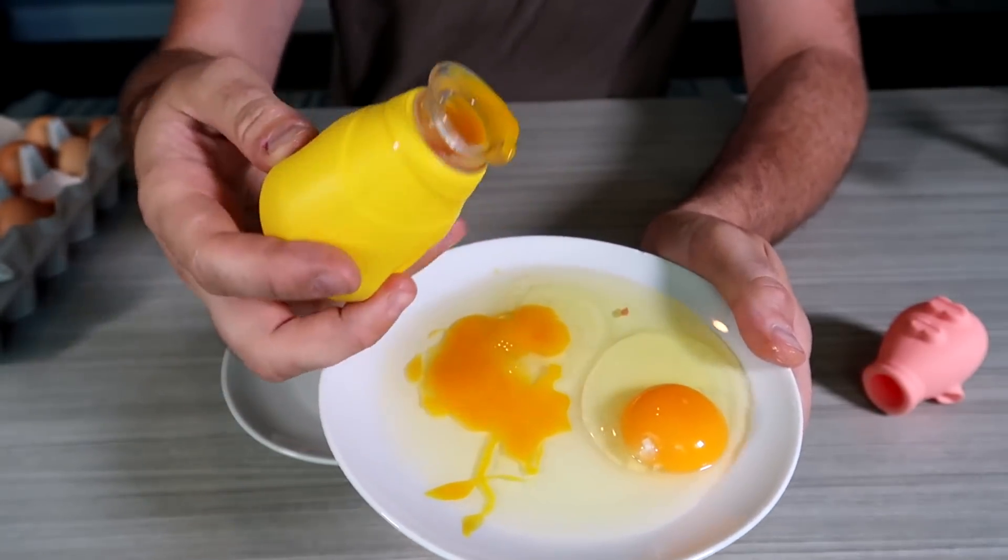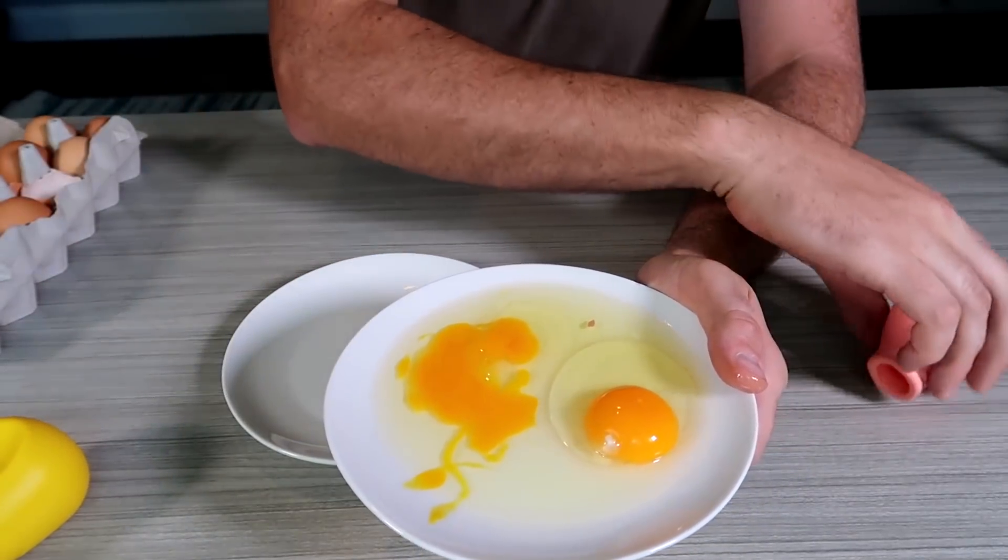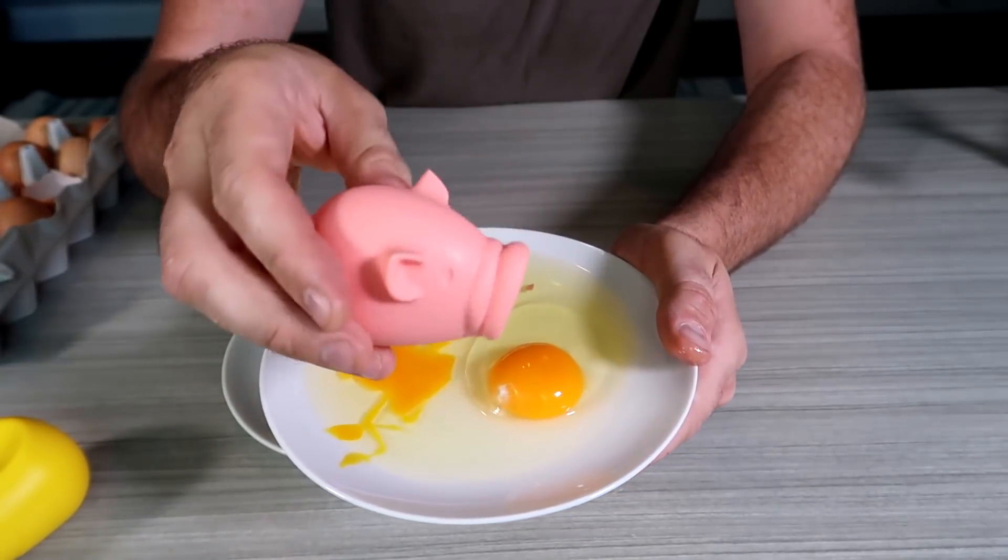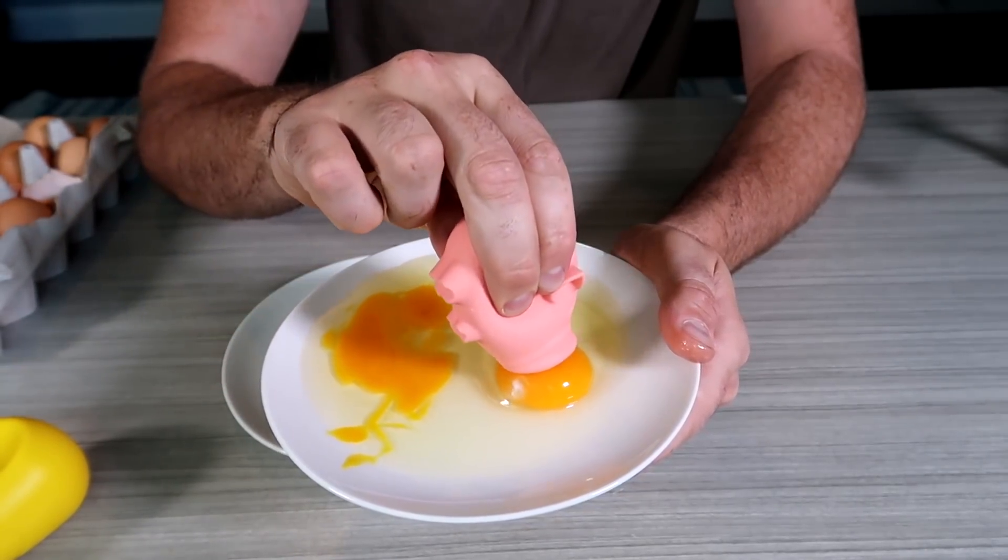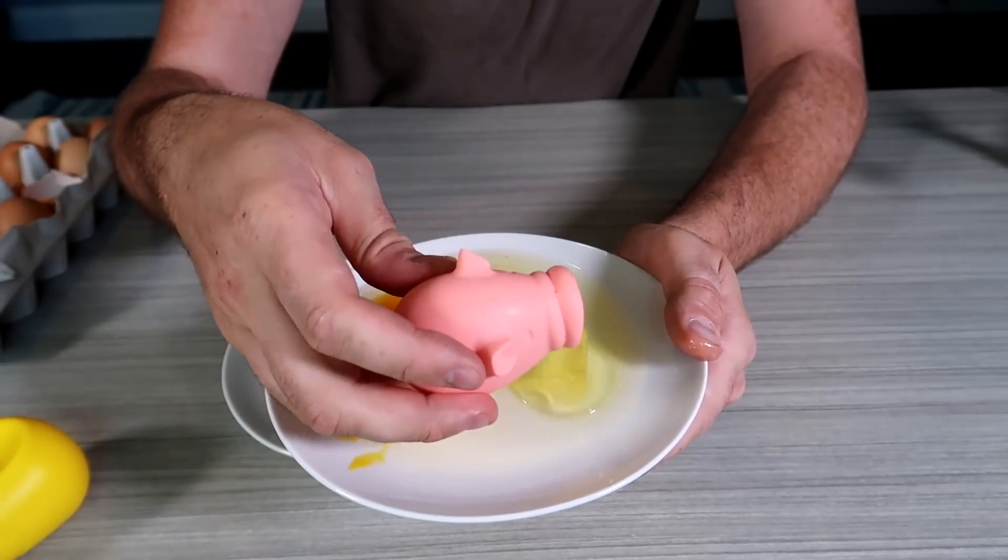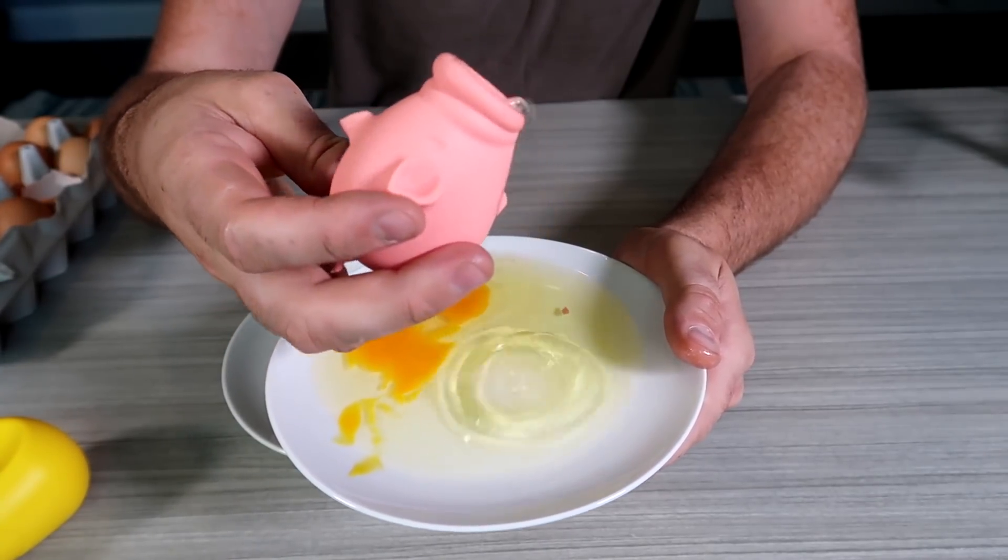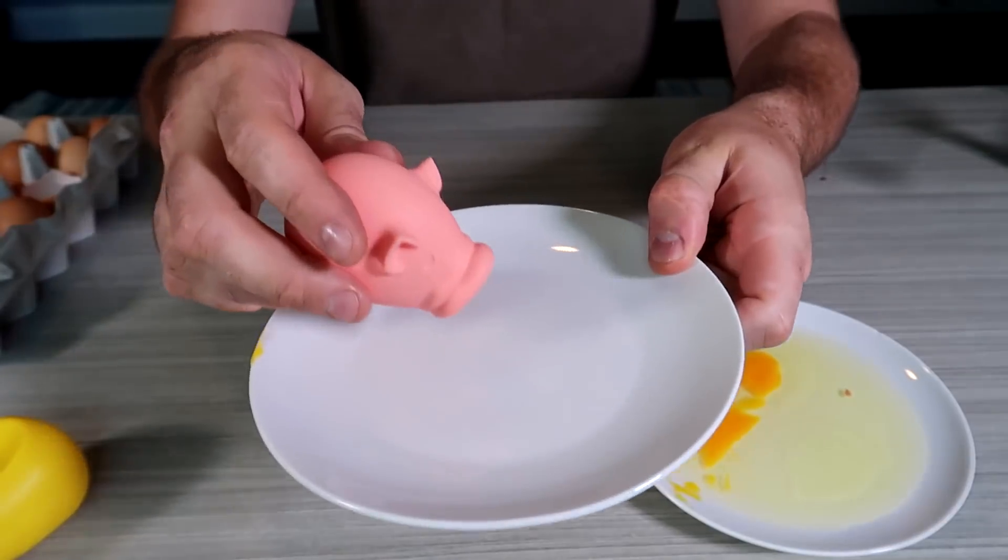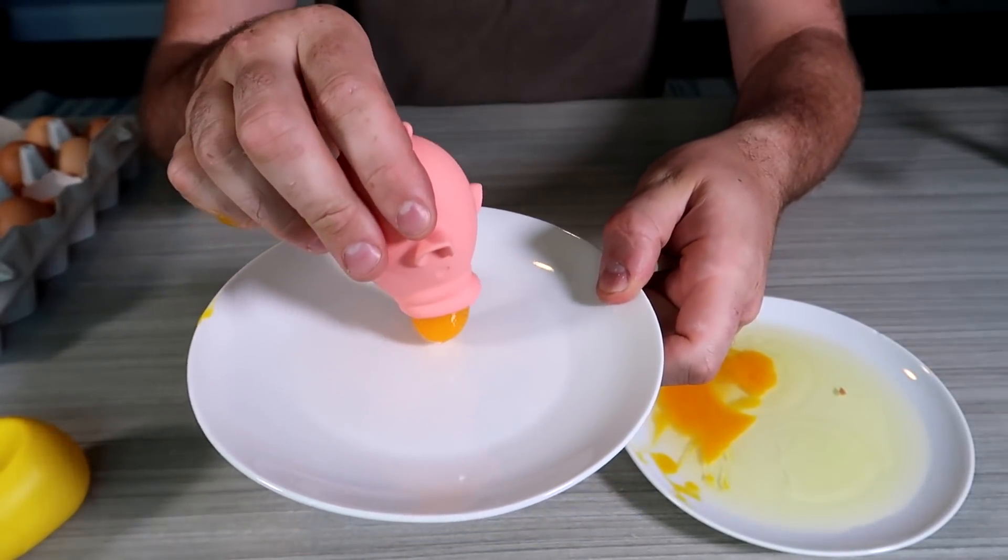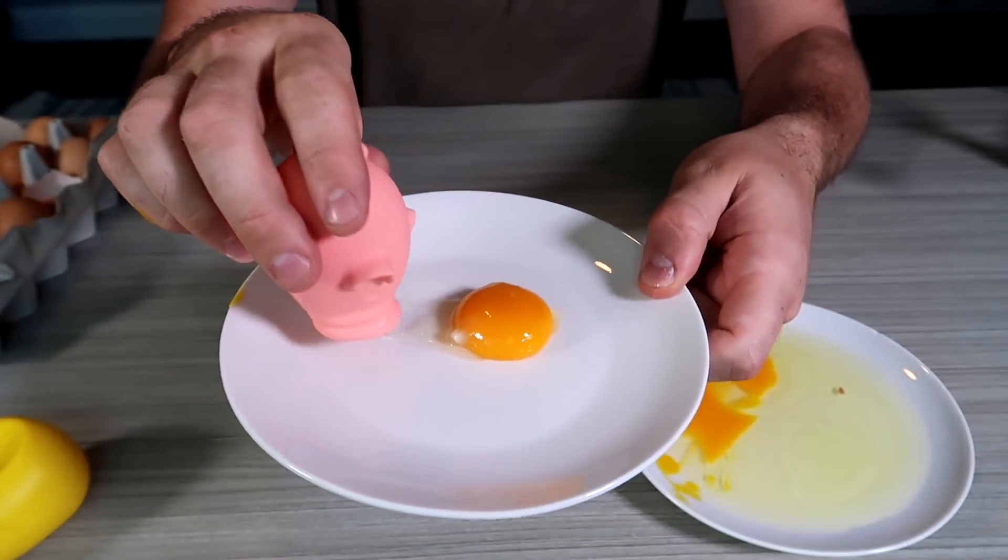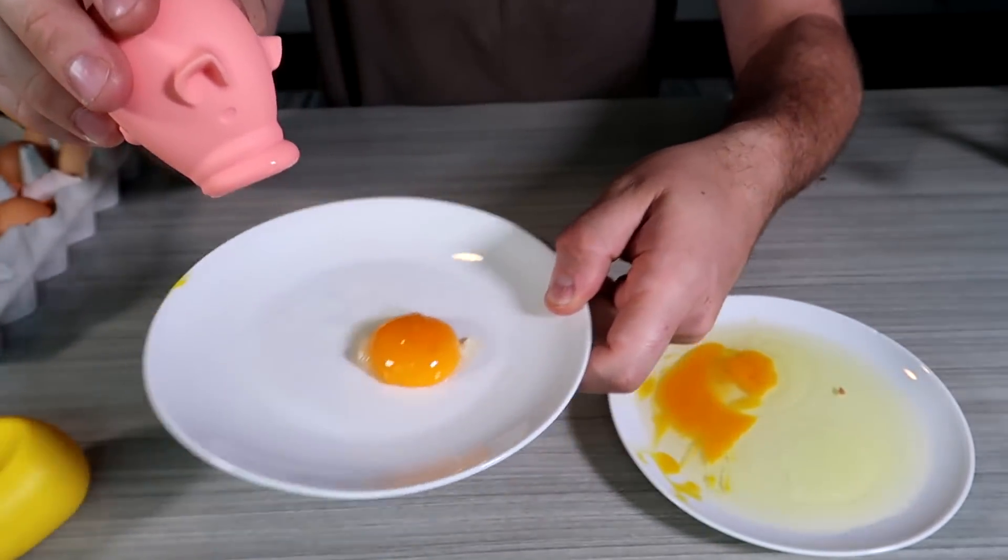So it doesn't work that well with the bigger yolks. Maybe with the smaller yolks it will work better. What about this one, the piggy? Squish it and suck it in. Let go over all the egg whites and then drop it. Boom. You know what, I'd say it did a pretty good job.